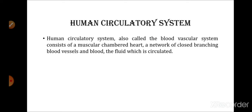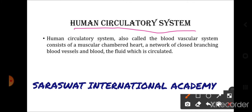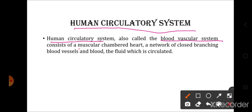In today's video we will be talking about the human circulatory system, specifically the human heart. The human circulatory system is also called the blood vascular system. It consists of a muscular chambered heart, a network of closed branching blood vessels, and blood — the fluid which is circulated. So there are three components: heart, blood vessels, and blood.